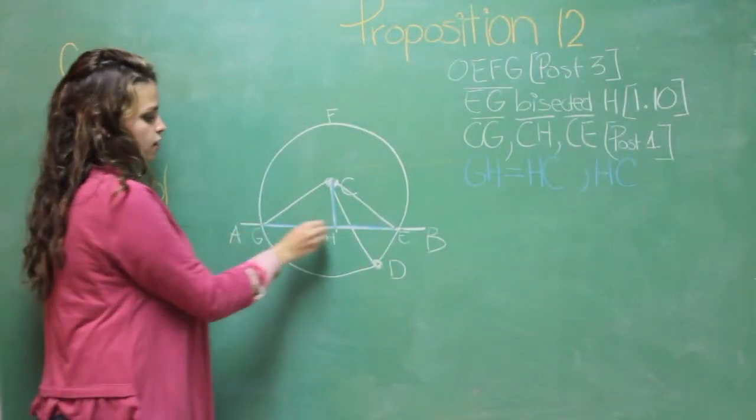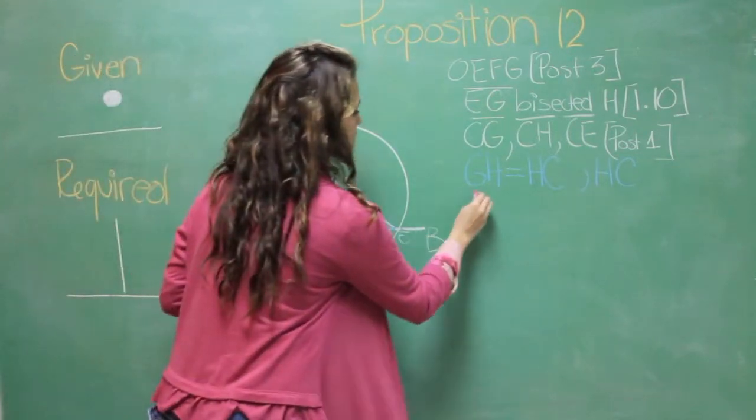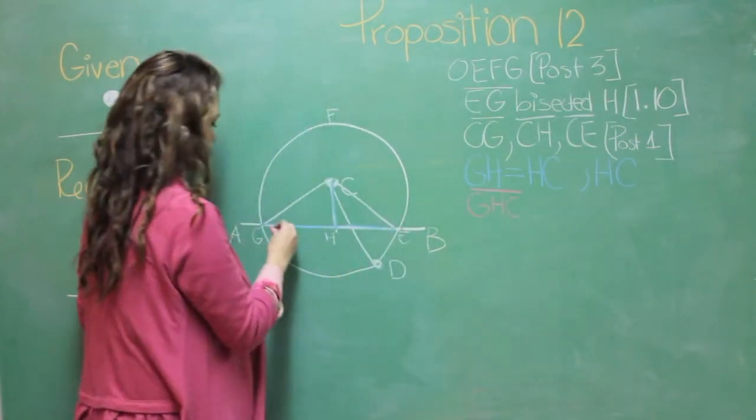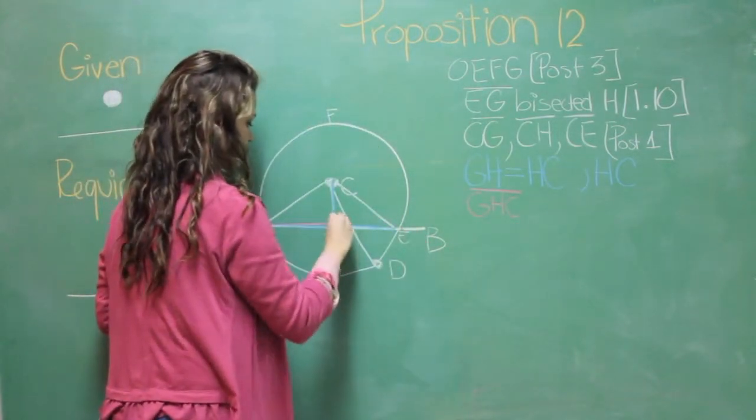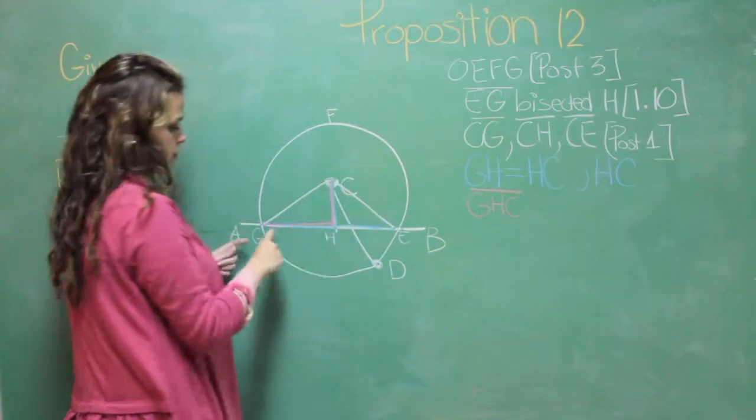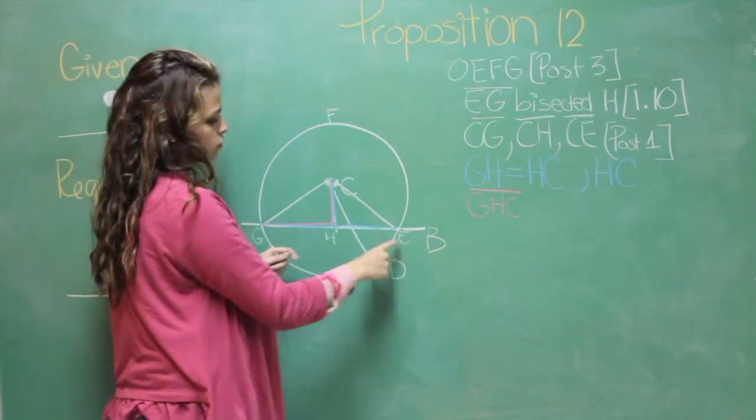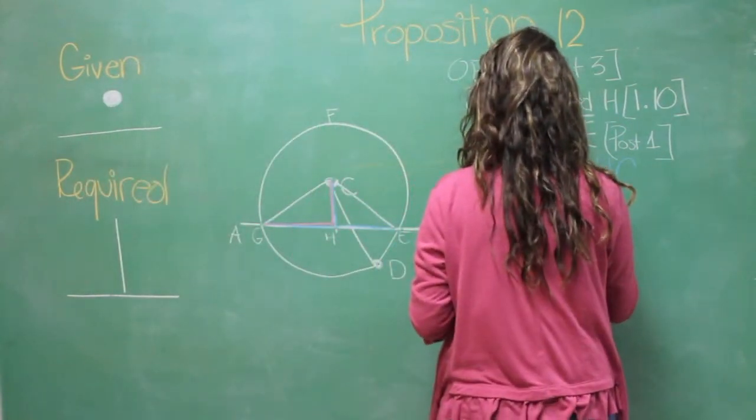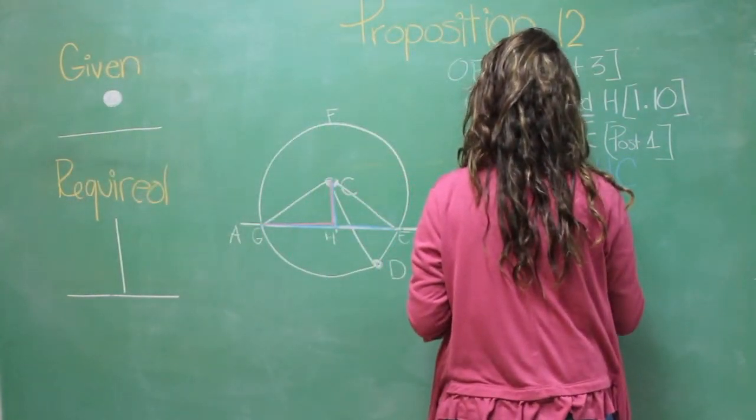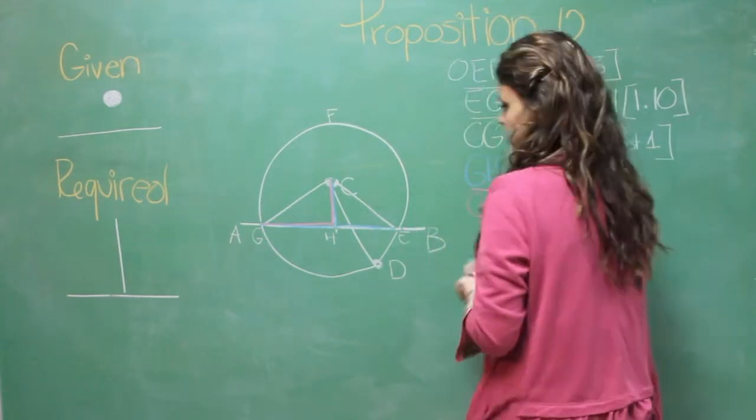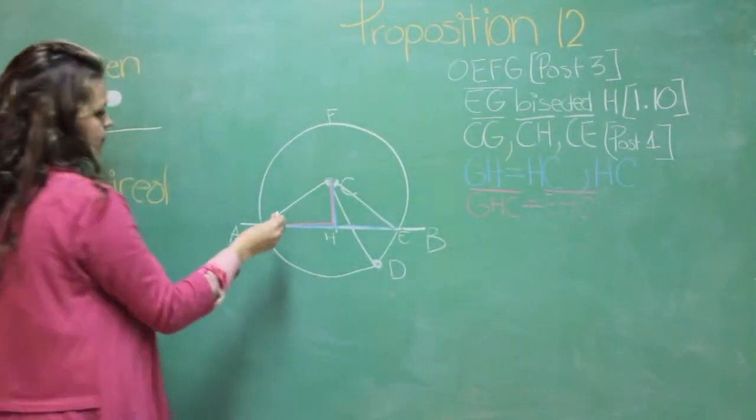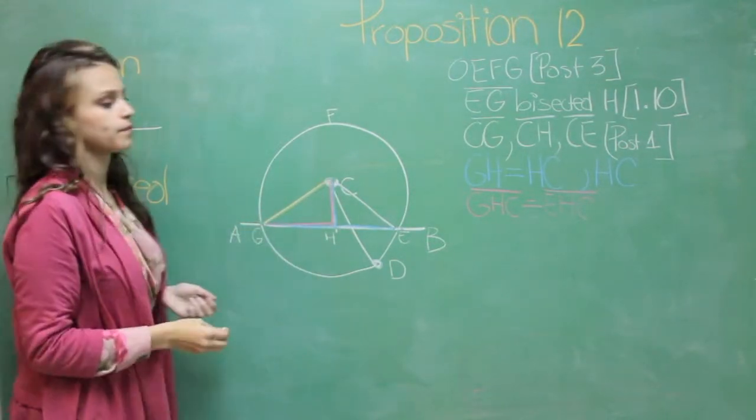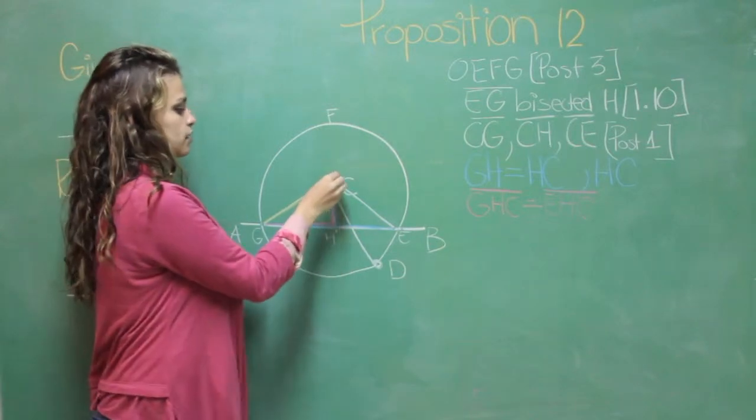And GH, C, these two sides is equal to EH, C respectively. The base CG is equal to the base CE.